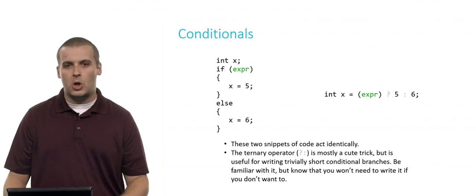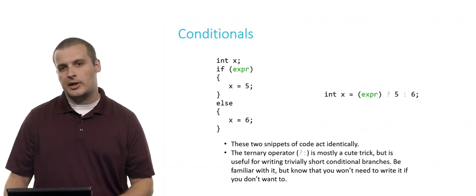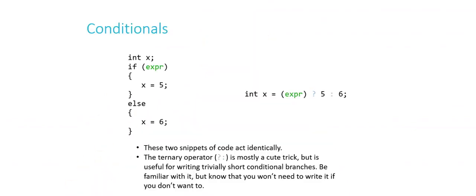So this is called question mark colon, or sometimes called the ternary operator. And it's pretty cool. It's usually used as a cute trick. But what it allows you to do is to simulate an if else with really small, really trivially short conditional branches. You generally wouldn't use question mark colon if you had six lines of code between each set of curly braces. But if you're just making a quick decision, if you're going to do one thing or the other and it's very simple, this might be an example of how to do it with question mark colon, the ternary operator.